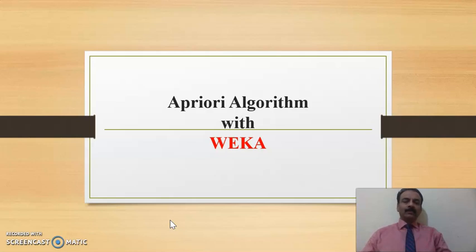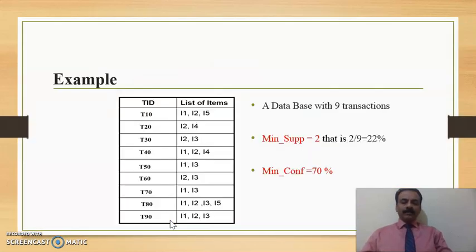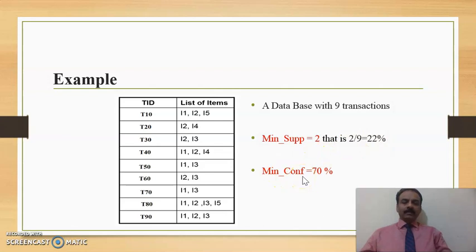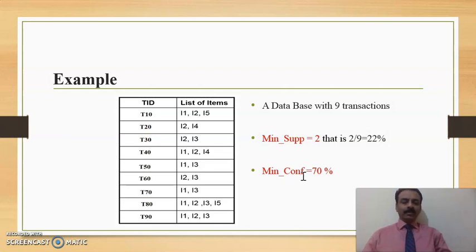This is a kind of continuation of the same example, so you are going to get a better idea at the end of this explanation. If you look at this example, there are nine different transactions. Each of those transactions has some items purchased by the customers. The minimum support has already been set here as two, which means 22 percentage, and the minimum confidence has also been set. We are going to have this file created first, and then the same file will be called in WEKA at the time of Apriori execution.